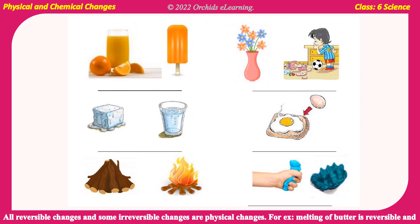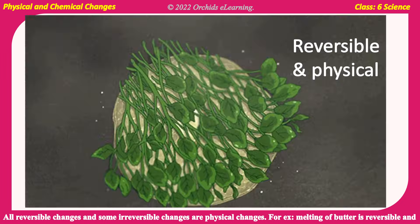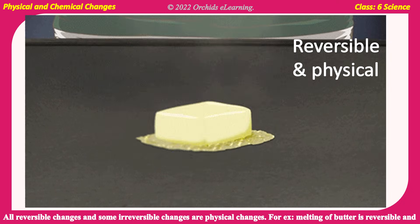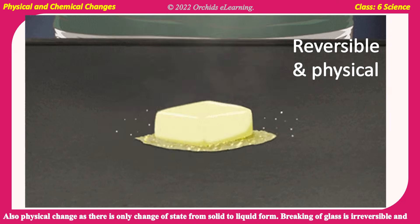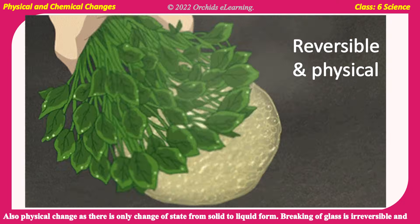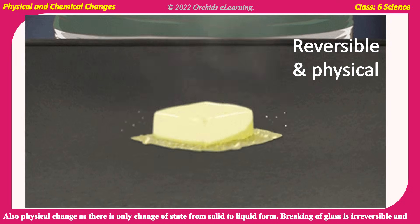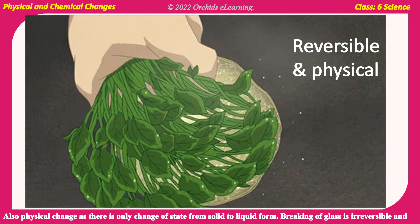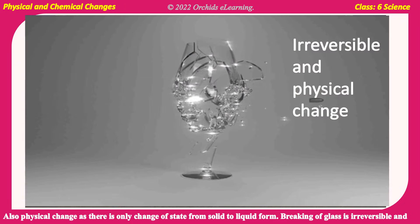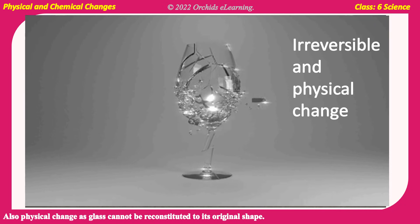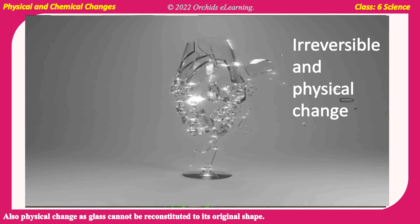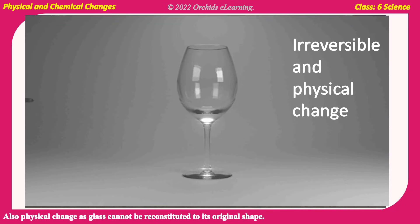For example, melting of butter is reversible and also a physical change, as there is only a change of state from solid to liquid form. Breaking of glass is irreversible and also a physical change, as glass cannot be reconstituted to its original shape.